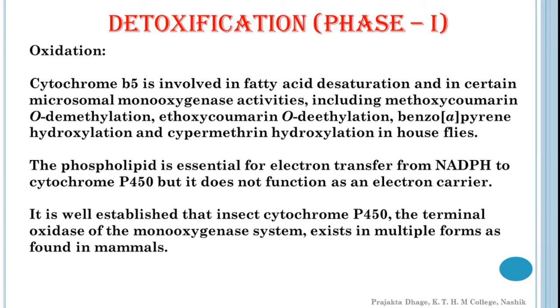Now, in some cases, the second electron may originate from NADH via cytochrome P5. Cytochrome P5 is involved in fatty acid desaturation and in certain microsomal monoxygenase activities including methoxycormine O-D-methylation, ethoxycormine O-D-ethylation, benzopyrene hydroxylation and cypermetrine hydroxylation in houseflies.